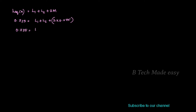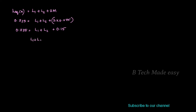Substituting 2M equals 0.15 back into equation 1: 0.725 equals L1 plus L2 plus 0.15. Therefore L1 plus L2 equals 0.725 minus 0.15, which gives L1 plus L2 equals 0.575 Henry. This is equation number 3.